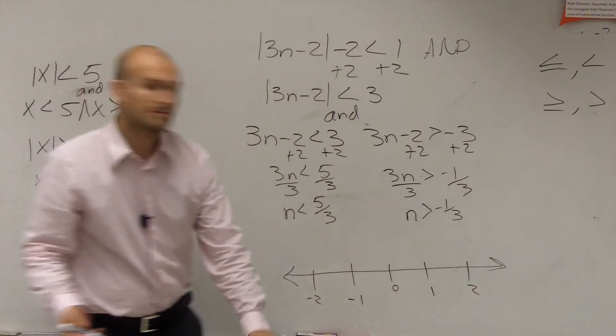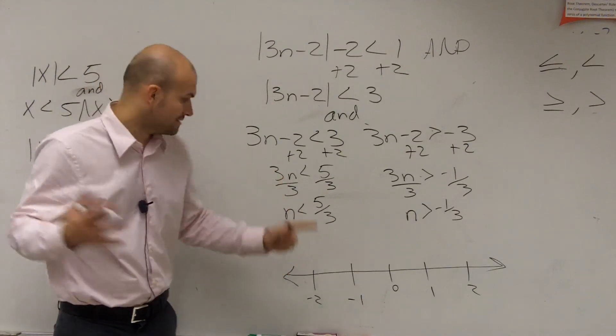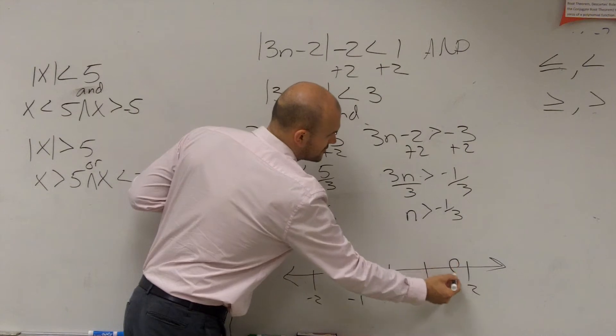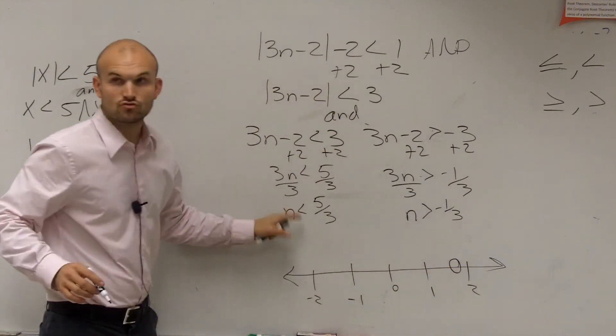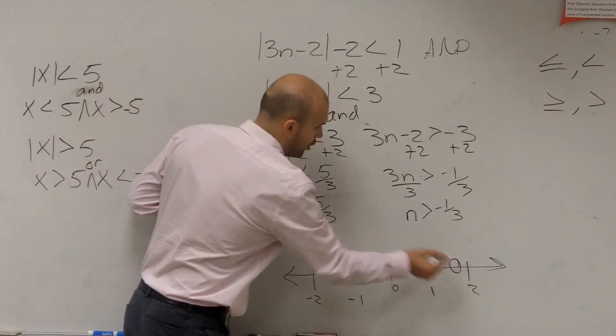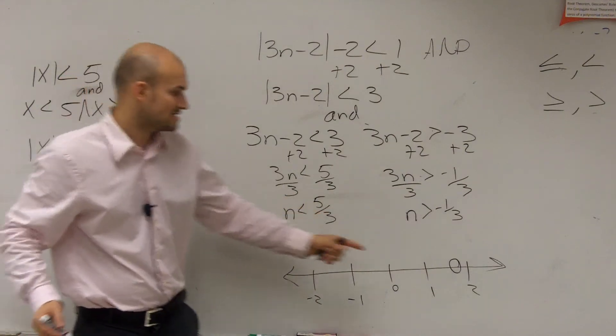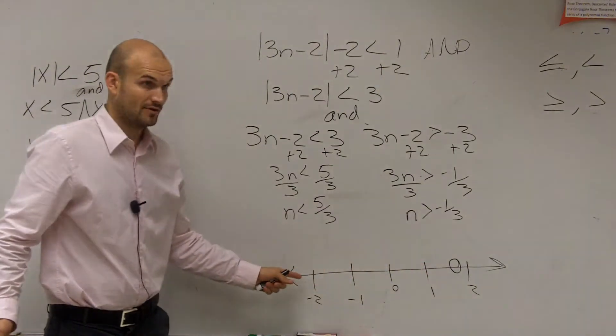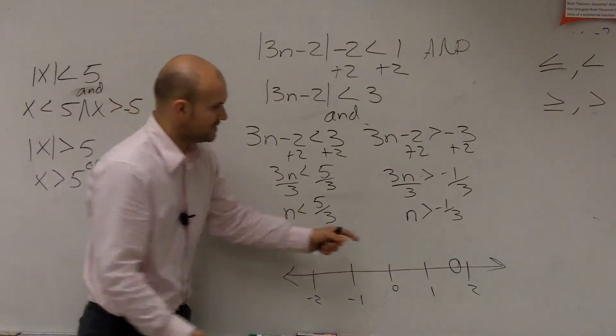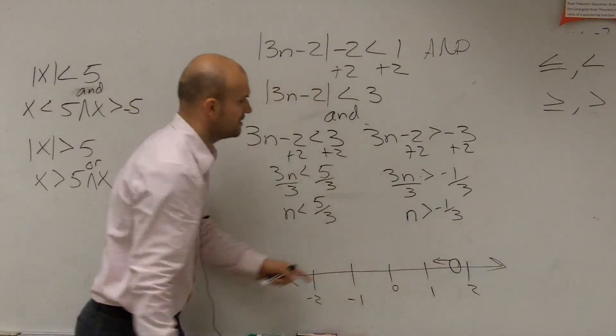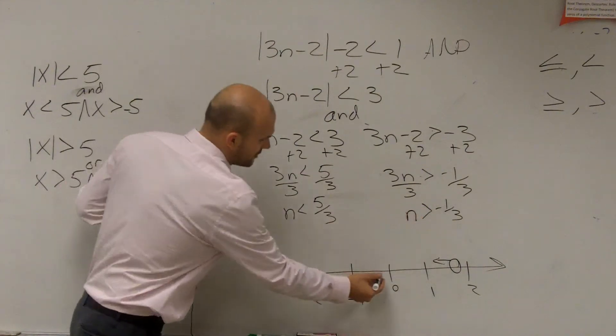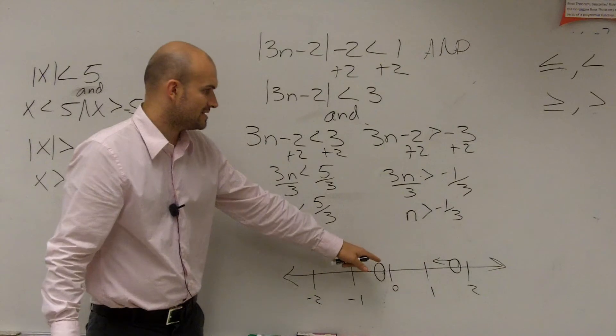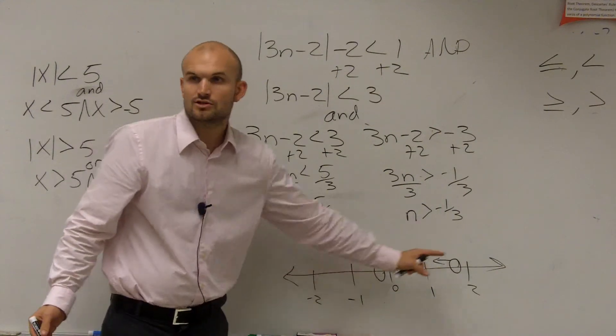So let's plot the points. 5/3, that's 1 and 2/3, which will be right here. Since it's less than, it's going to be an open circle. That means all values that are less than 5/3. Is that going to go to the left or to the right? To the left, correct. n is greater than negative 1/3. That's the open dot right there. All values greater than negative 1/3 are going to be to the right, correct?